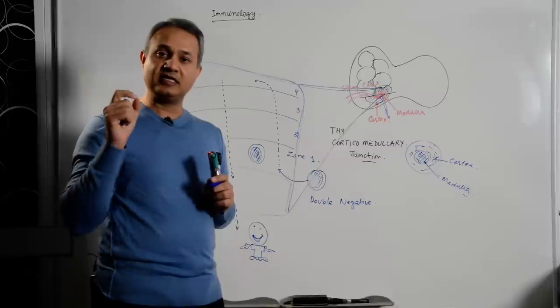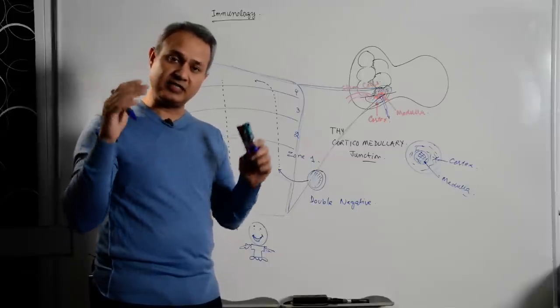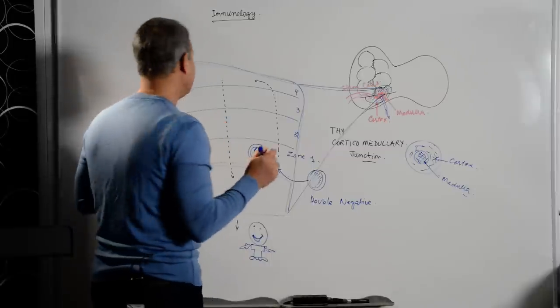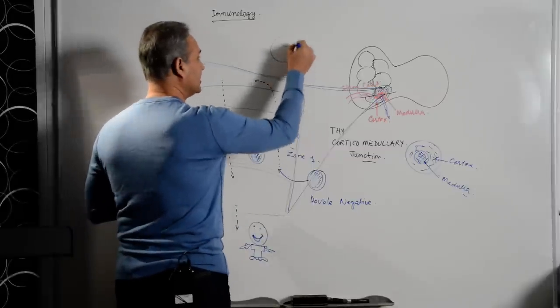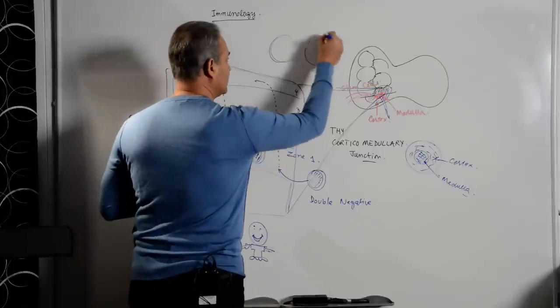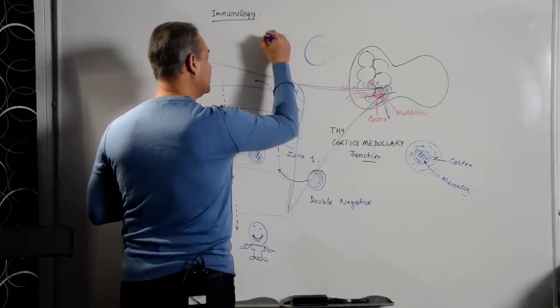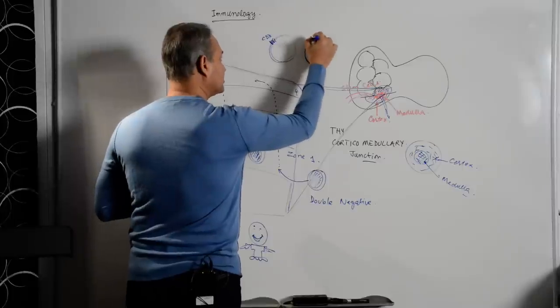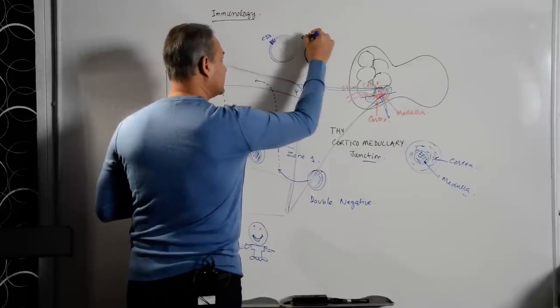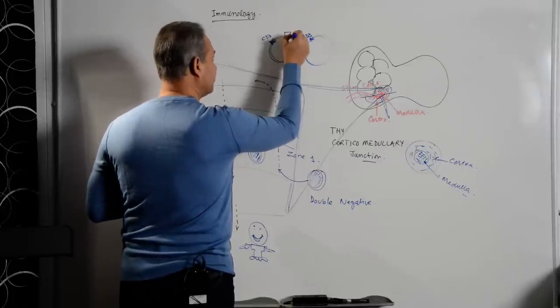Again, in my previous T cell lectures, go back and see this, but what does that mean is that if I make the T cell here, two T cells, the helper T cell will have CD3. Actually, all lymphocytes have CD3. CD3 plus it would have CD4. CD4.